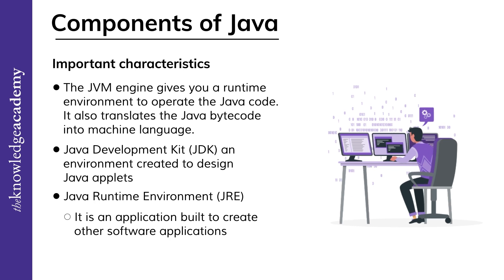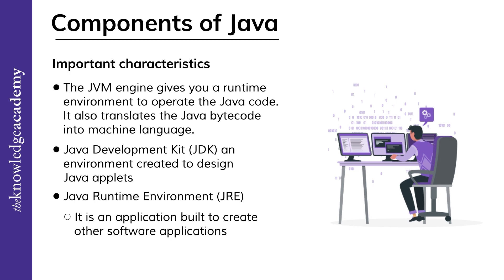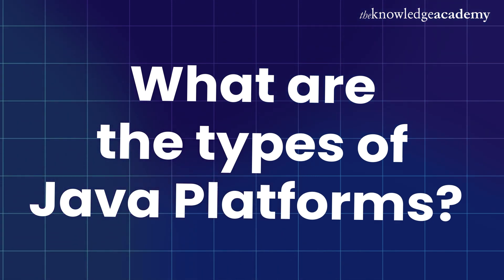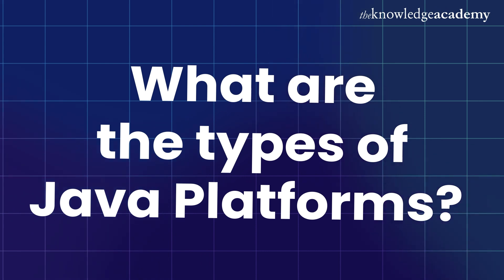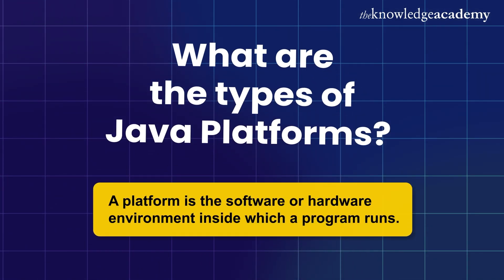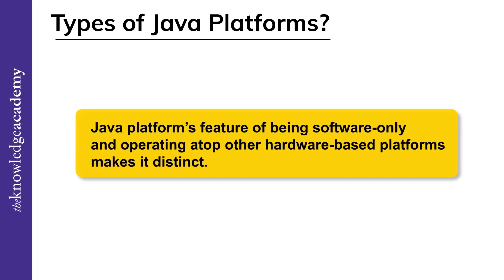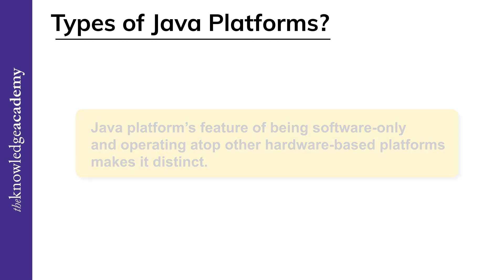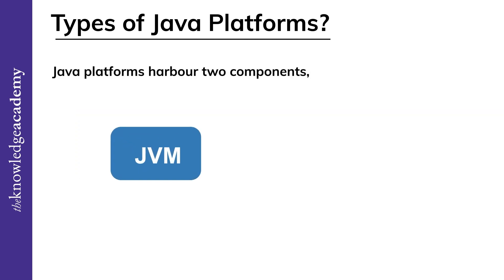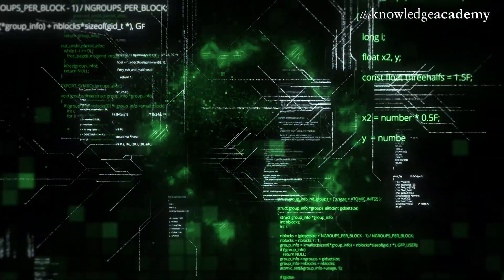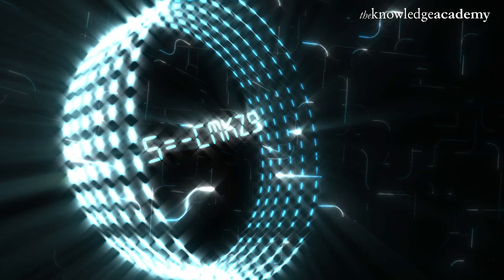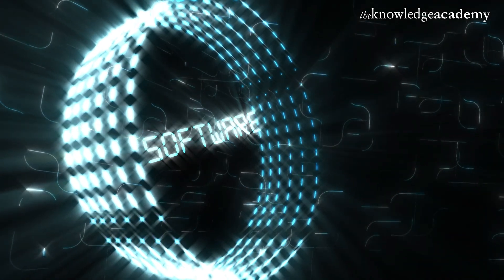Now we'll be taking a look at the last topic of today's video: the various Java platforms, their unique features, and what sets them apart from one another. A platform is the software or hardware environment inside which a program runs. The most well-known platforms are Windows, Solaris, Linux, and Mac OS. Java's platform is software-only and operates atop other hardware-based platforms, making it distinct. Java platforms harbor two components: the JVM and the Java API. The JVM is the base for the Java platform, and the API is an enormous collection of ready-to-use software elements that provides many capabilities.